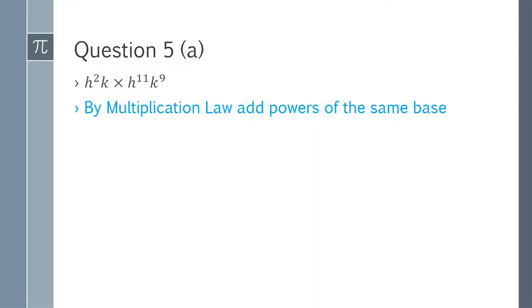Question 5a: h^2 k multiplied by h^11 k^9. By the multiplication law, we add the powers of corresponding variables. h^(2+11) = h^13, and k has power 1 (implied), so k^(1+9) = k^10. The answer is h^13 k^10.